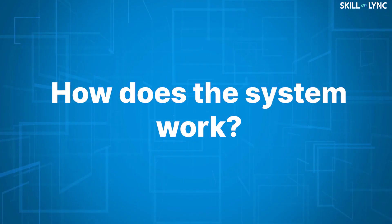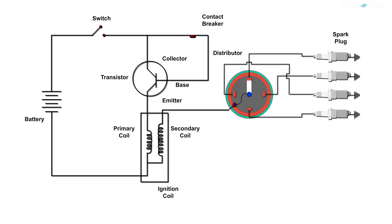Now, how does this system work? When the ignition switch is on and the contact breaker is closed, the current flows from the battery to the primary coil. As the contact breaker is connected with the base, it draws only a low current, whereas a high current is passed through the collector. The current flowing through the primary coil develops a magnetic field around it.